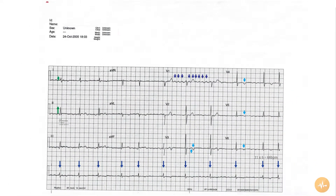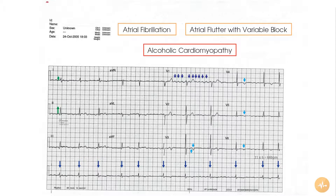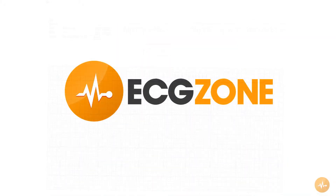The differential diagnosis of atrial fibrillation and atrial flutter with variable block is quite common, and patients certainly spend some time in one rhythm and sometimes the other. Both atrial fibrillation and atrial flutter can be manifestations of alcoholic cardiomyopathy.